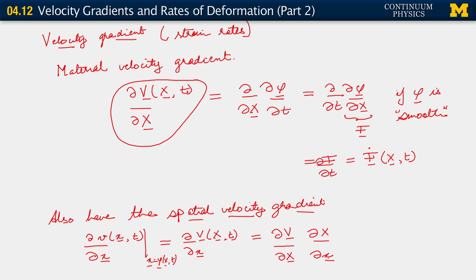So we write this as partial of V with respect to capital X, partial of capital X with respect to little x. But then we observe that for the first term on the right, we already have a simpler or a different form. Derivative of the velocity with respect to the reference position is simply F-dot. And we observe that just above here. And then partial of capital X with respect to little x is just F-inverse. So we have F-dot F-inverse.